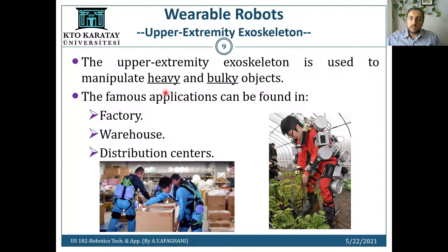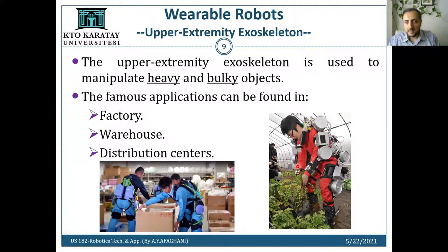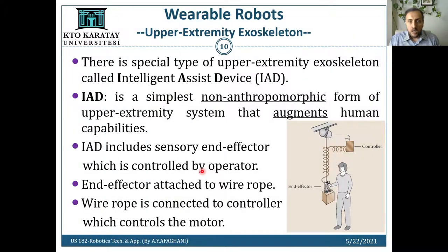Upper extremity exoskeletons are used to manipulate heavy and bulky objects. For example, you can carry objects, move them, pull heavy loads, and so on. They can be used in factories, warehouses, distribution centers, and so on. There is also a special type of upper extremity exoskeleton called the Intelligent Assist Device, or IAD.